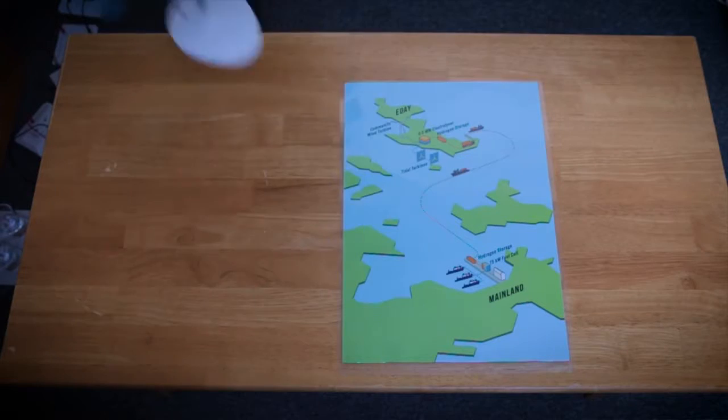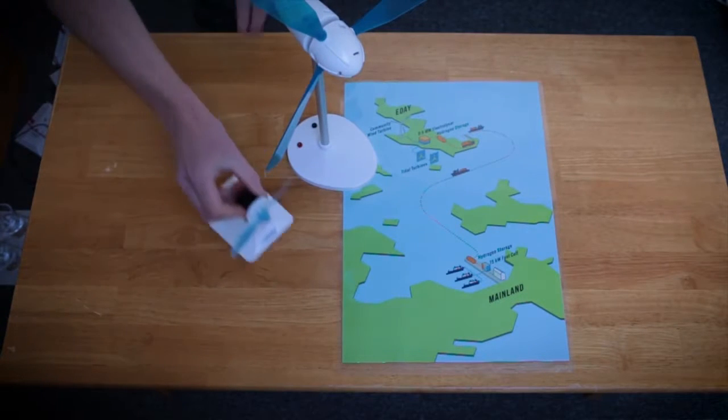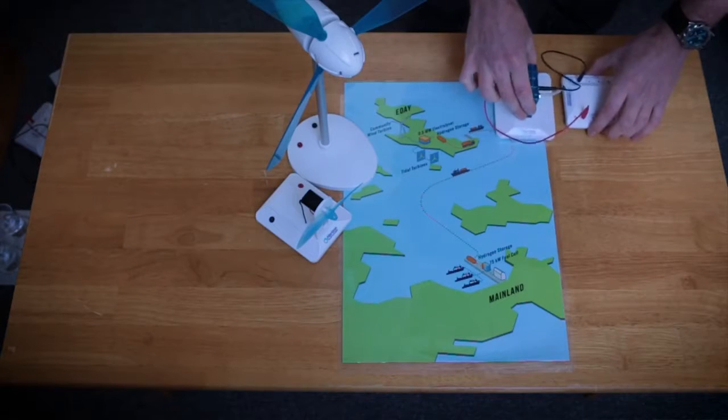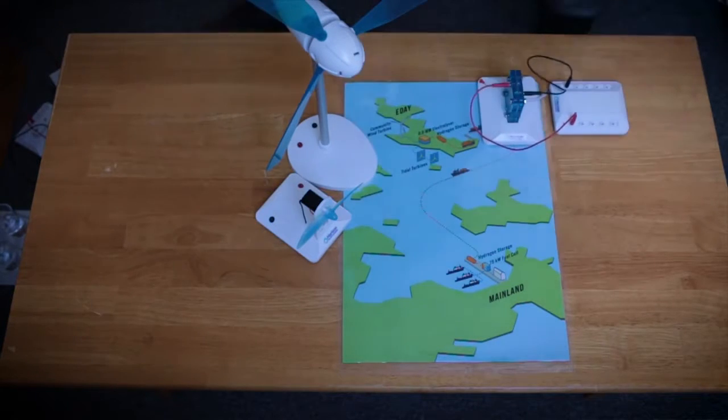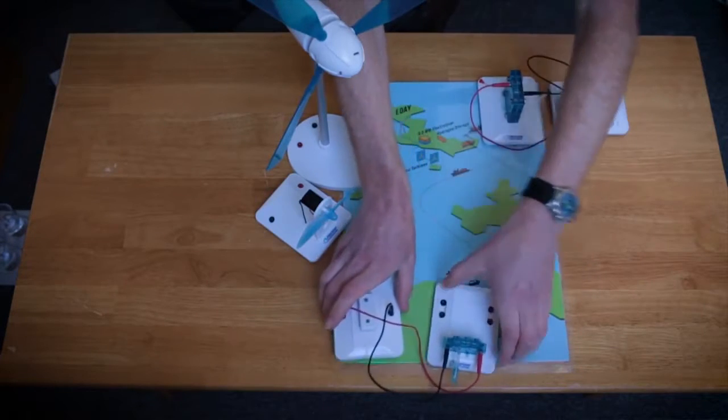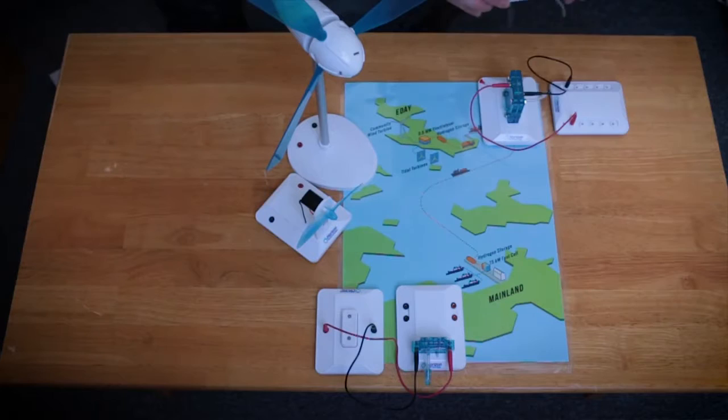Here's a kit to demonstrate what we do. It has the same parts, but it's much smaller and uses batteries for power. Wind turbine. Tidal turbine. Electrolyzer. That's the Eadie end of things. Acting like the Kirkwall site, a fuel cell and some LED lights. In between, a hydrogen store.